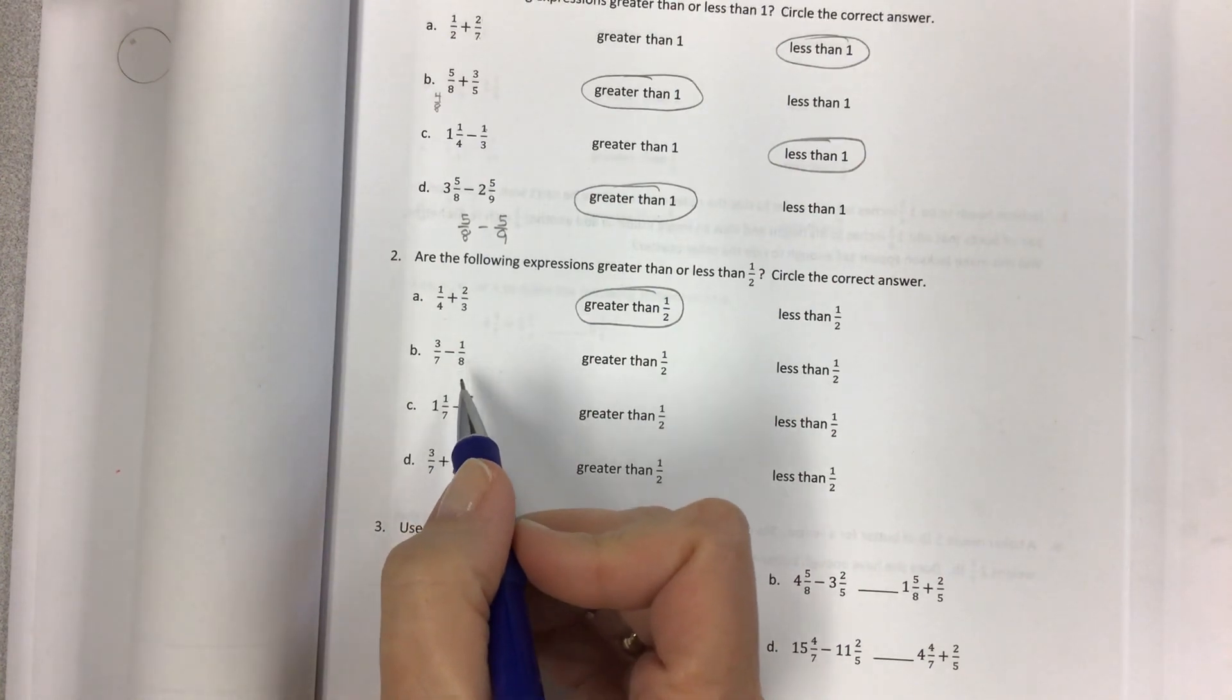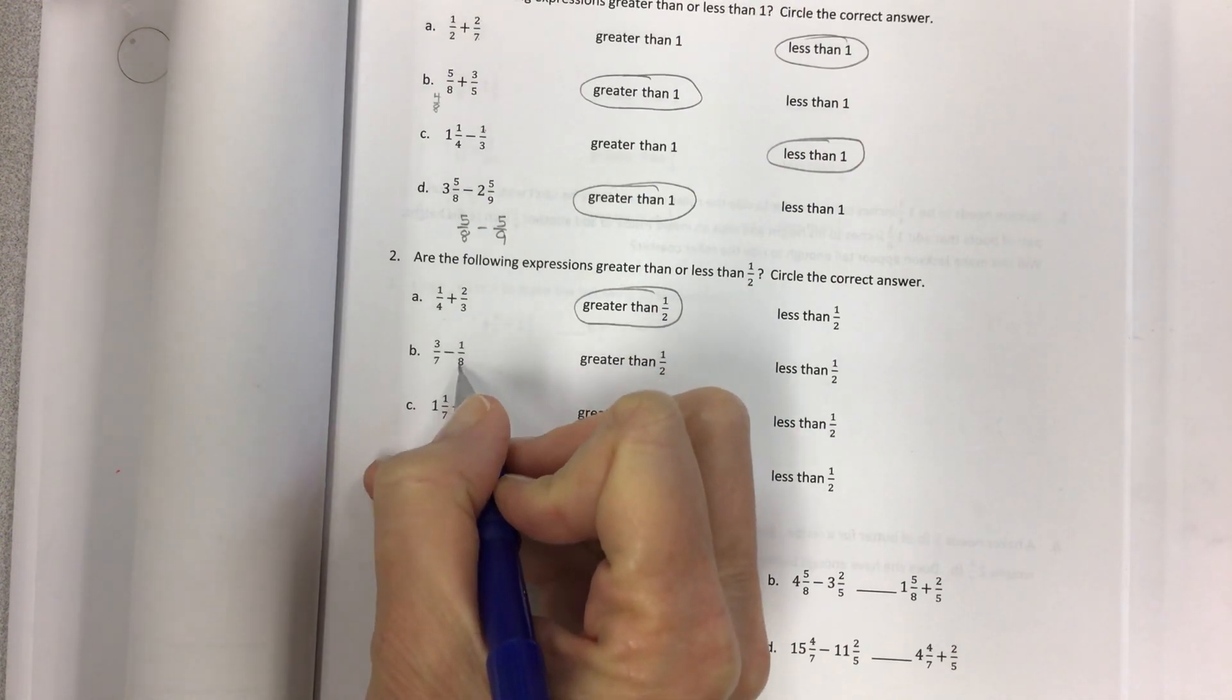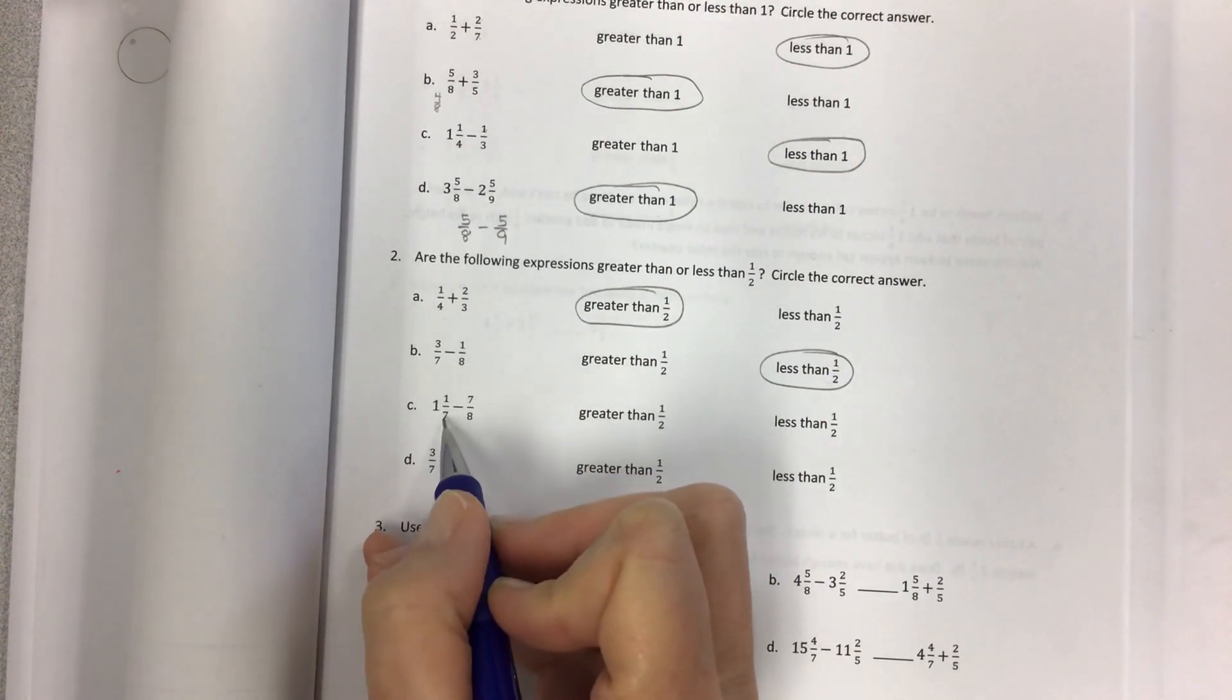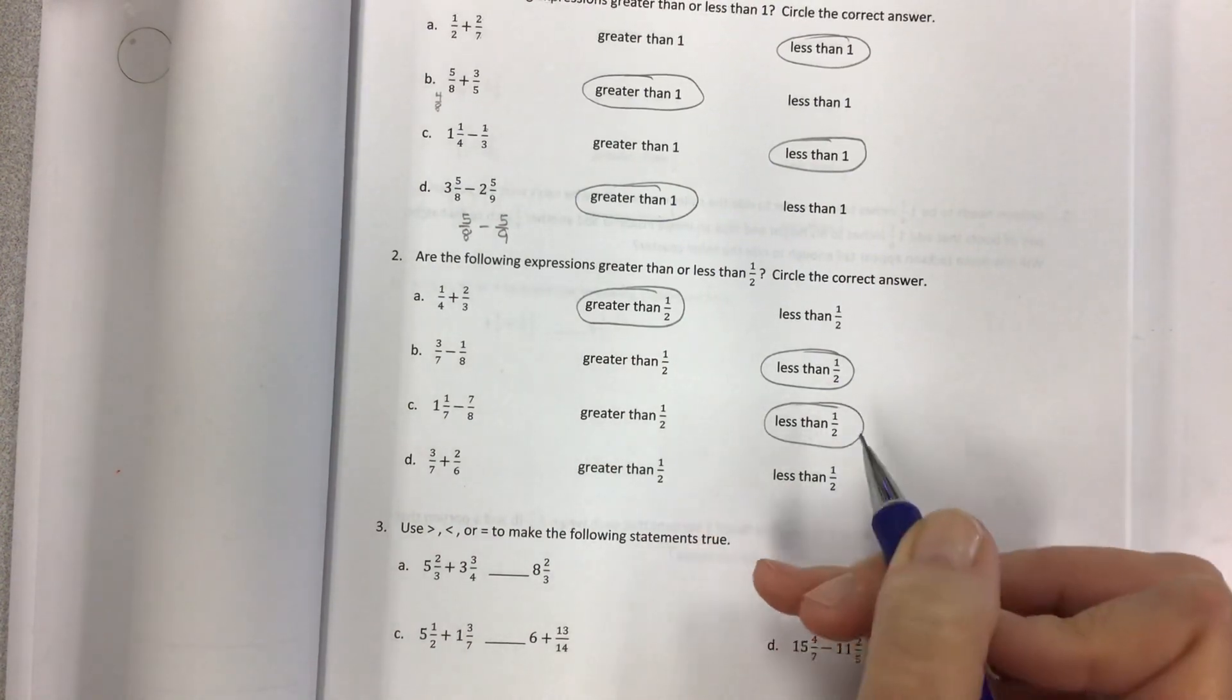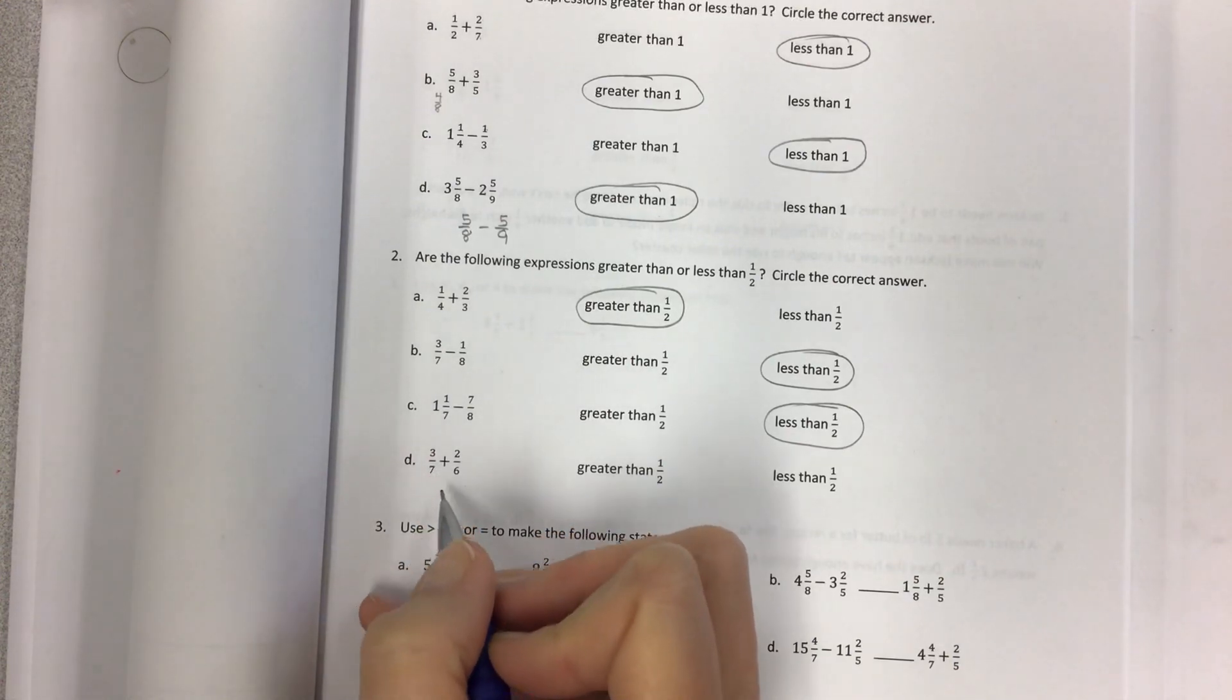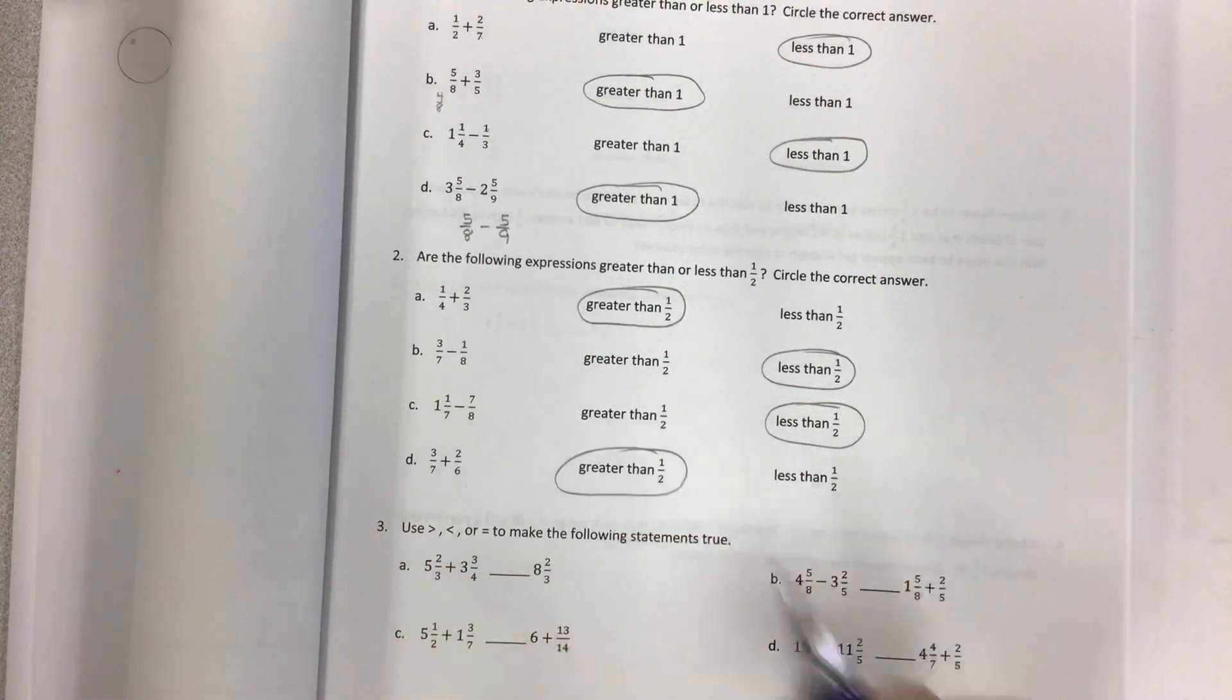Three sevenths minus one eighth. And again, what is half of seven? We're at less than half right now and then we take away more. And even though this is very tiny, we're still going to be less than half. How about one and one seventh minus seven eighths? So if I have just barely, this is a small fraction, a little bit more than one, but I'm taking away almost one whole. I'm taking away almost a whole. Seven out of eight parts is almost the whole thing. Then my answer will be less than half when I'm finished. And then three sevenths plus two sixths. What are the sizes of these fractions? Again, this is just about half, it's just under half, and this is just under half. So if you have two that are just under half, when you put them together you're going to end up with greater than half.